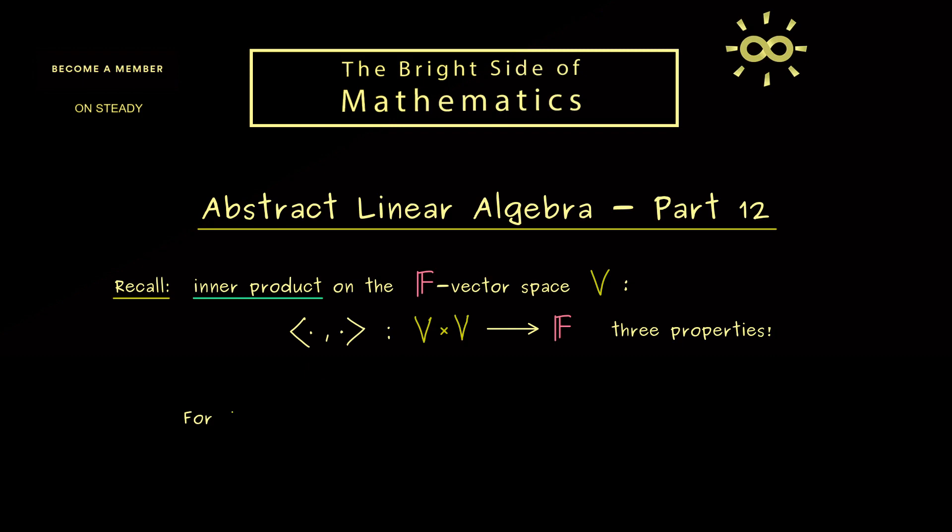Moreover, we also discussed the special case of inner products in F^n. Again, there any inner product can be expressed with the standard inner product. This means if we put in two vectors y and x, then we find a positive definite matrix A such that the general inner product here is equal to the standard inner product where we have the matrix A inside. However, please don't forget the important ingredient, this matrix has to be positive definite.